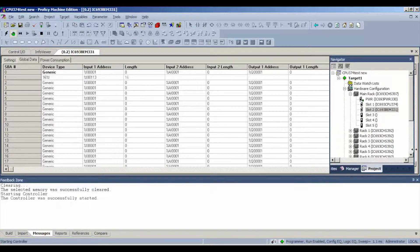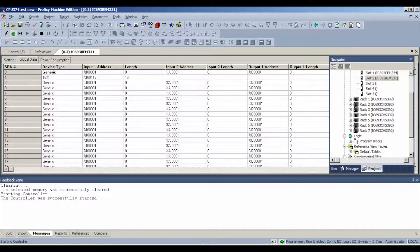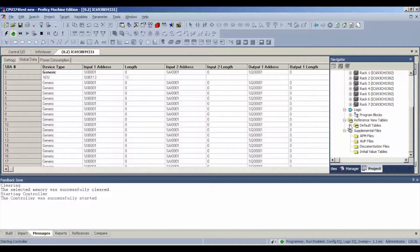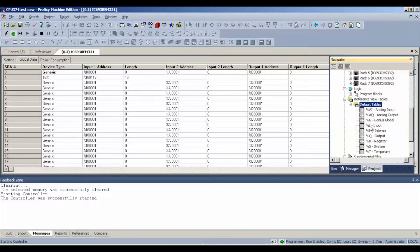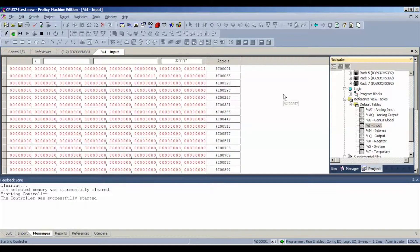What I'm going to do before we go back over to the genius block is I'm going to open up my reference tables, default tables, input. We're starting at 113, which is right here.